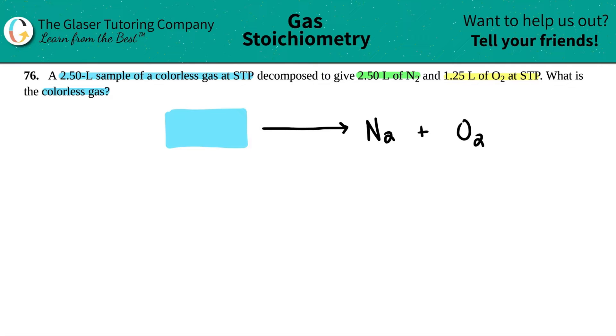Now let's look at these volumes that they give us. They told us that I had a 2.5 liter sample of the colorless gas. So I know that the reactant, whatever this is, is 2.50 liters. And they said that we have 2.50 liters of N2 and 1.25 liters of O2.